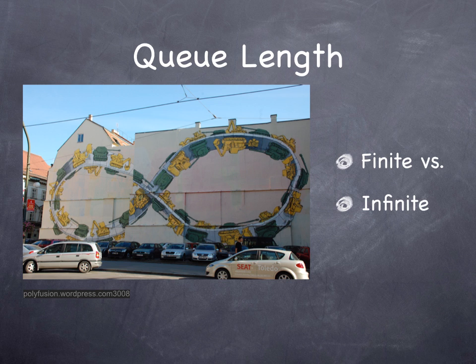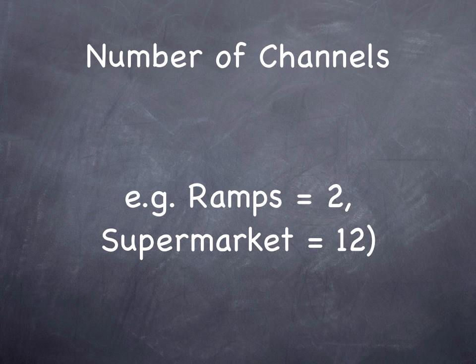In contrast, at a ramp meter, an on-ramp might only hold a finite number of vehicles — say, 40 vehicles — and the 41st would spill onto the arterial. Some queues are finite; the math for finite queues is harder than for infinite queues. We also consider how many channels the queue has — how many lanes. At a supermarket there might be 12 or 24 lanes; at a ramp meter, two lanes might function as one. At a McDonald's there might be six cash registers open. If there's randomness in the system, the number of lanes allows people to switch between lanes potentially, making the system a little more efficient.